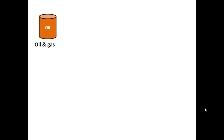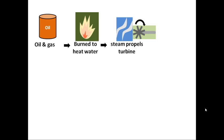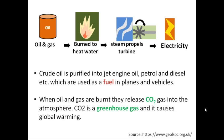Once extracted, these non-renewable energy resources such as oil and gas are used as fuel — burnt to produce heat, which converts water into steam. That steam is used to rotate turbines, which in turn produces electricity. The crude oil is also purified into jet engine oil, petrol, and diesel, which are used as fuel in planes and vehicles. When oil and gas are burnt, they release carbon dioxide gas into the atmosphere. CO2 is a greenhouse gas responsible for causing global warming.